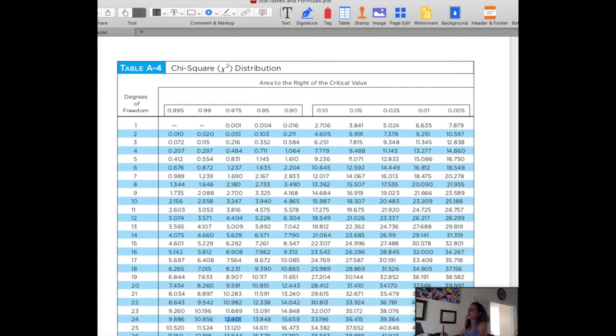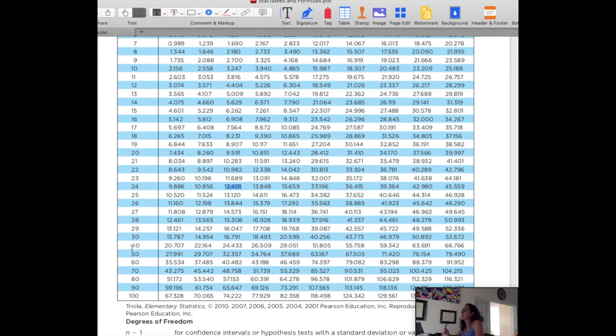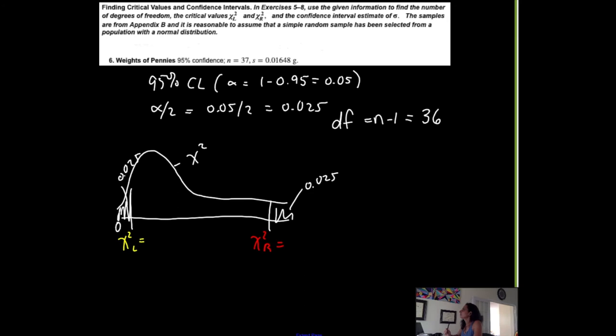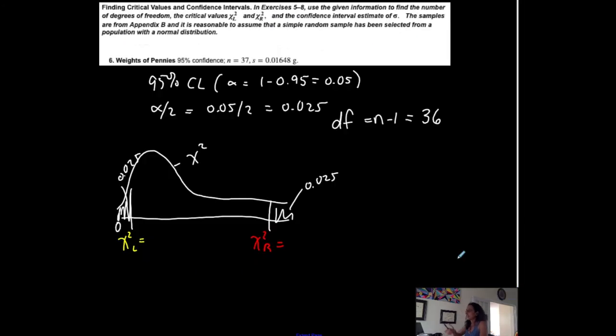Sometimes our tables are limited. So 0.025 is the area to the right, so that's this column, third from the right, and 40 is the degrees of freedom that I'm going to use because I do not have 36 here. 59.342. 59.342 is my right-tailed chi-squared critical value for this situation.